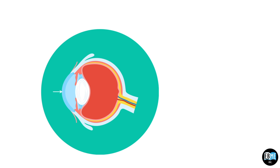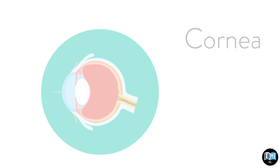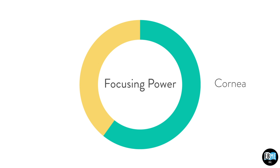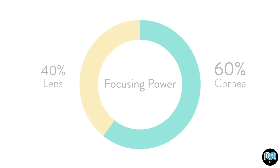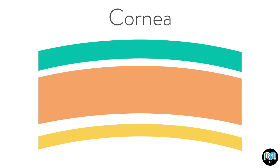The transparent surface in the center of the eye is called the cornea. It is responsible for over 60% of the focusing power of the eye, with the remainder being done by the lens. The main layers of the cornea include an outer epithelium.